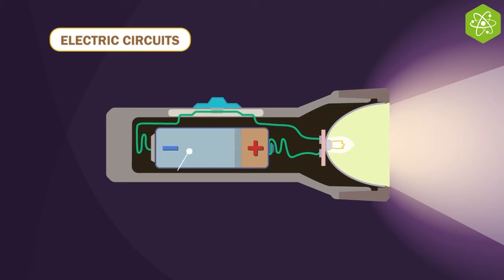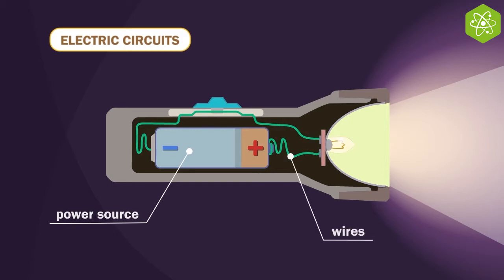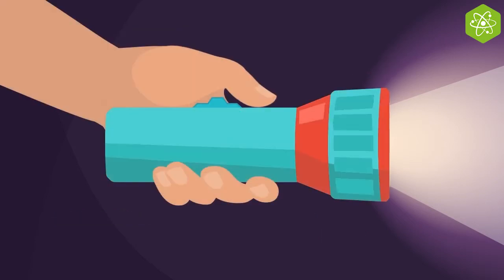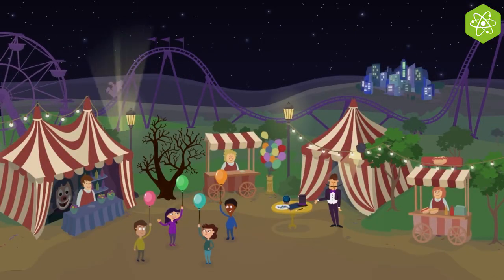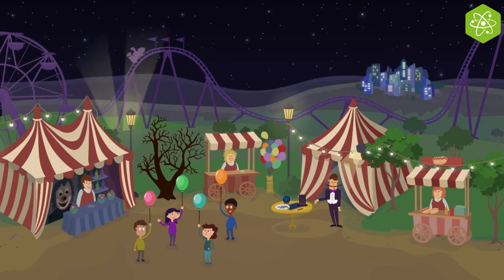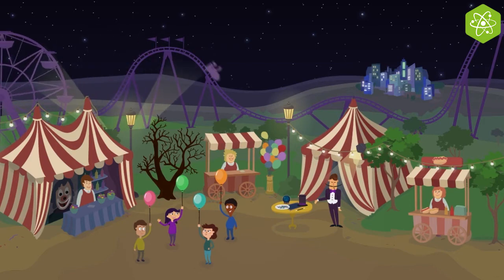In a circuit, the power source supplies electrical energy that is transported through wires to the loads, which transform the electrical energy into other types of energy. All electrically powered machines around us need circuits in order to work.